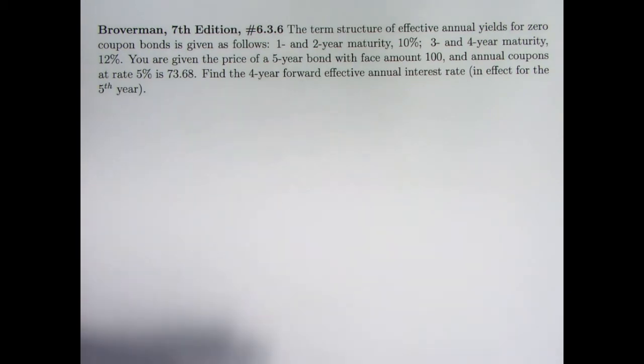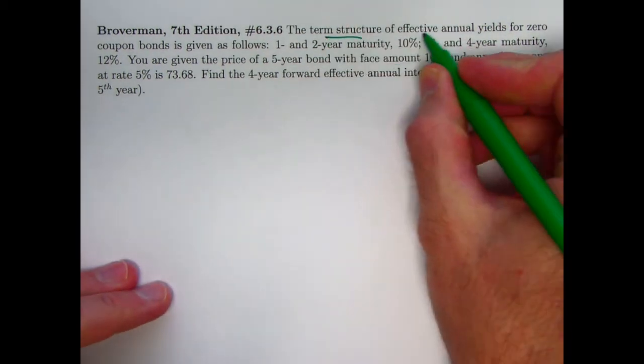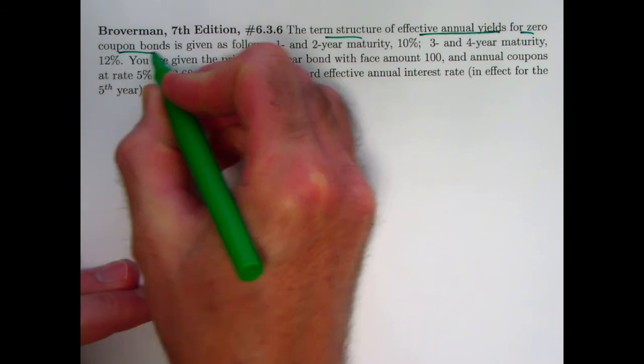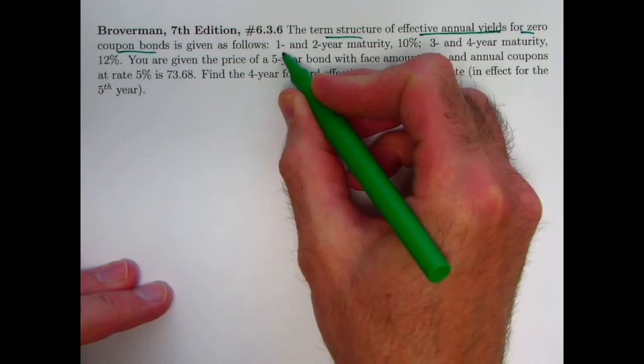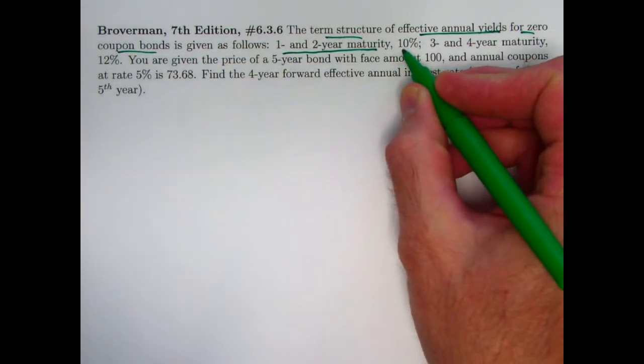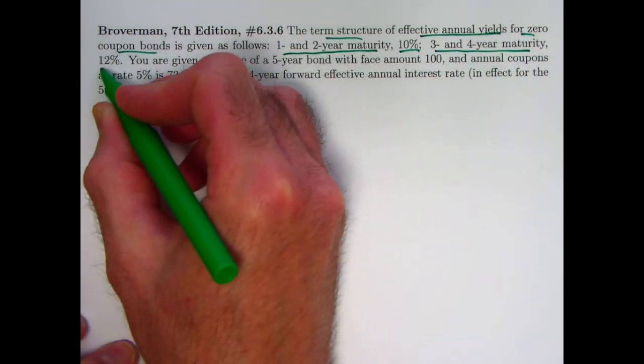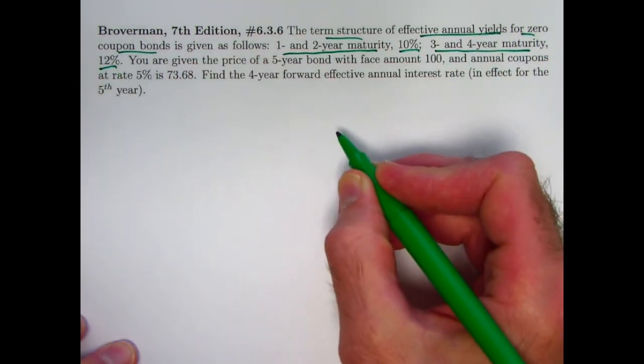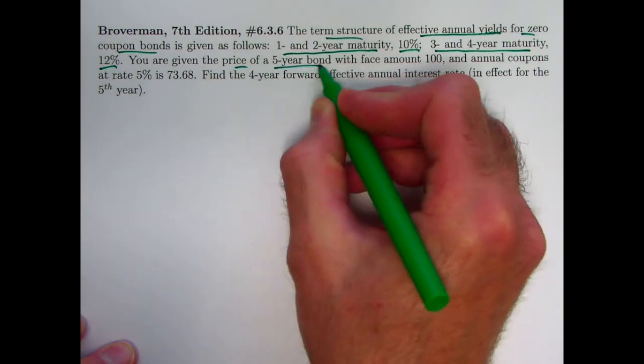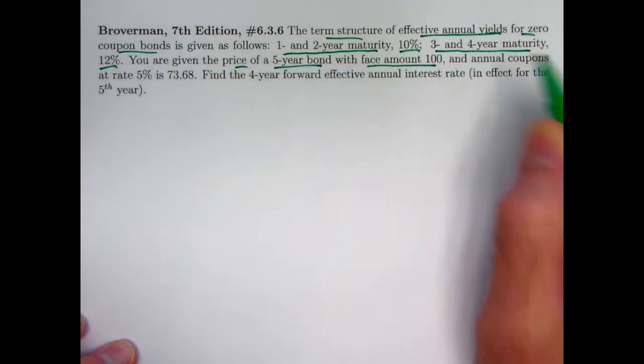We've got the term structure of effective annual yields for zero coupon bonds given as follows. Those with one and two-year maturity have an effective annual yield of 10%. Those with three and four-year maturity have an effective annual yield of 12%.